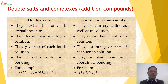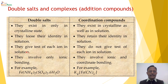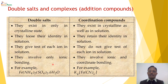Double salts exist only in the crystalline state and lose their identity in solution, whereas coordination compounds retain their identity in both the crystalline state and in solution. Double salts give the test of each and every ion, but coordination compounds do not. This means double salts have ionic bonding whereas coordination compounds have coordinate type of bonding.